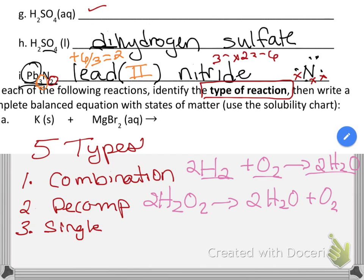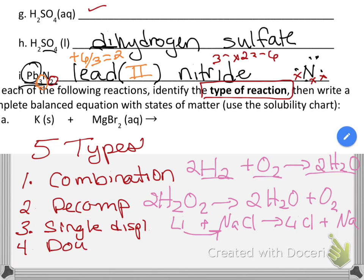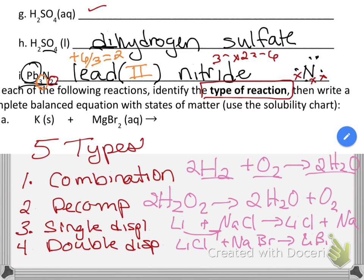The third type is called single replacement, or single displacement — they're the same thing. Here you start with an element, say lithium, and a compound like sodium chloride, and the two metals switch places. So lithium and chlorine pair up and sodium is by itself. Double displacement is similar, except you have two compounds to begin with — like lithium chloride and sodium bromide — and the ions swap partners.